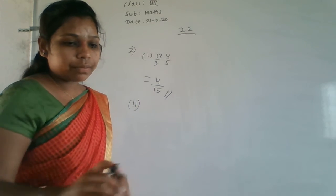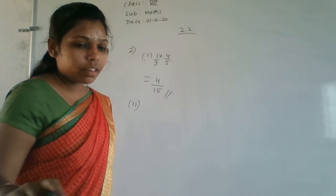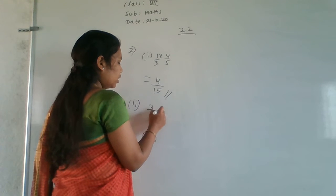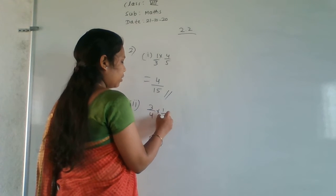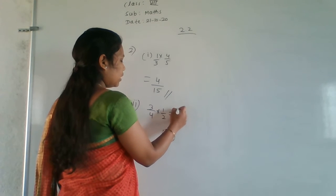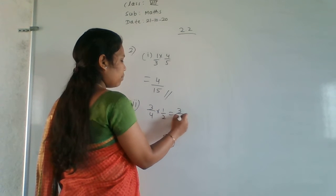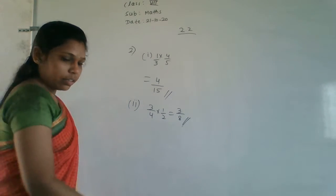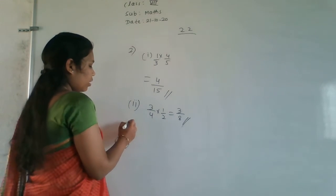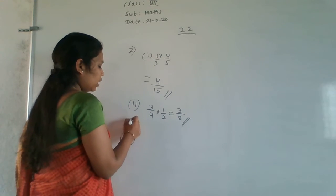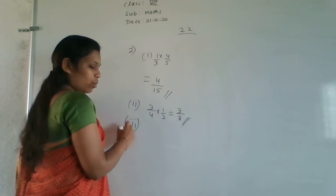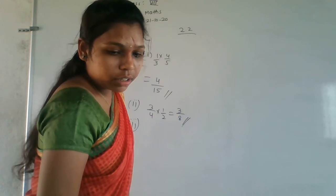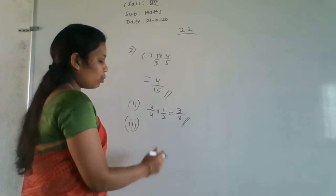Second question: 3/4 × 1/1. That equals 3/4 × 1 = 3/4. So 3/4 is the answer.